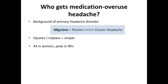It essentially boils down to having certain genes associated with the chronification of pain. It can also occur in other primary headache disorders such as cluster headache, though this is rarer. We know it's more common in patients who regularly use opiate-based medications — things like morphine, codeine, tramadol, and triptans — than simple analgesics such as paracetamol, non-steroidal anti-inflammatory drugs, and aspirin.